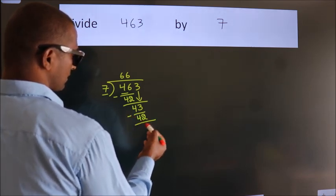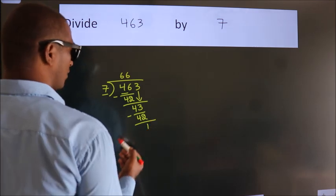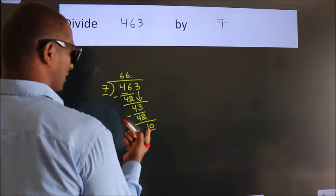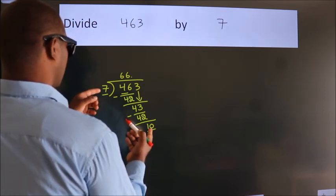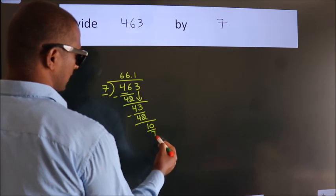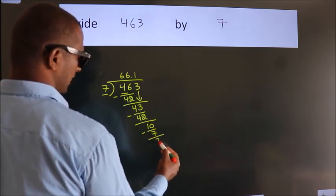After this, no more numbers to bring down. So what we do is we put a dot and take 0. So 10. A number close to 10 in the 7 table is 7×1=7. Now we subtract. We get 3.